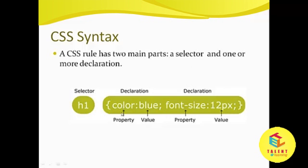Color is a property which we want to define for a particular selector or tag. We have to supply various properties which we want to set for a tag. At the same time we have to pass the value to the property, prefixed with a colon. After that we have to append a semicolon. So this is how we can give CSS for a particular tag.